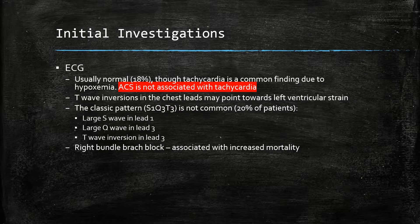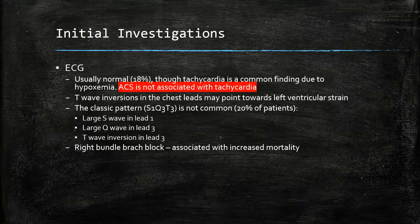Approximately one-fifth of the time the ECG is normal, although tachycardia is a common finding induced by hypoxaemia. The key point here is that ACS is not associated with a tachycardia. T wave inversions in the chest leads may point towards left ventricular strain. The classic S1Q3T3 pattern is not actually very common — it consists of a large S wave in lead 1, a large Q wave in lead 3, and a large T wave inversion in lead 3. Right bundle branch block, if present on the ECG, is associated with increased mortality.